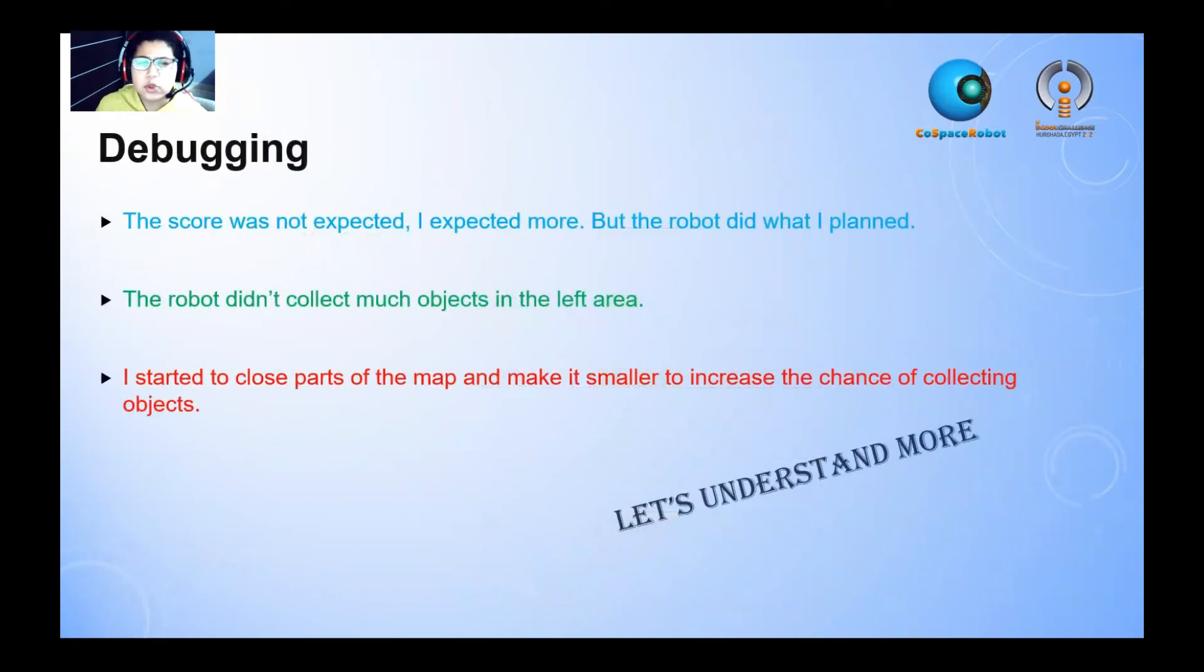Debugging. The score was not expected. Me, I expected more, but the robot did what I told him to do. The robot didn't collect much objects in the left area. That was my problem. My solution, I started to close parts of the map and make it smaller to increase the chance of collecting objects. Let's understand more.